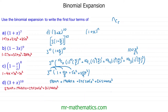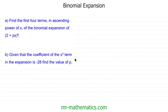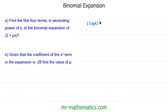Now let's try one final question — an exam-style question. We've been asked to find the first four terms in ascending powers of x of the binomial expansion of (2 + px) to the power of 8. For part b, given that the coefficient of the x³ term in the expansion is negative 28, find the value of p. We'll begin with part a, expanding (2 + px) to the power of 8.